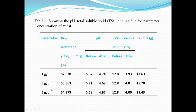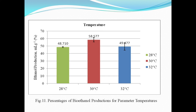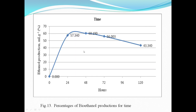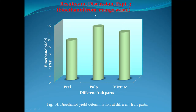For pineapple, testing temperatures of 28, 30, 32, and 33°C showed the highest bioethanol at 33°C. Comparing rotten versus fresh fruits, rotten fruits yielded higher bioethanol than fresh fruits. Testing at different time intervals of 0, 24, 48, 72, and 120 hours showed bioethanol increasing up to 72 hours and then decreasing.